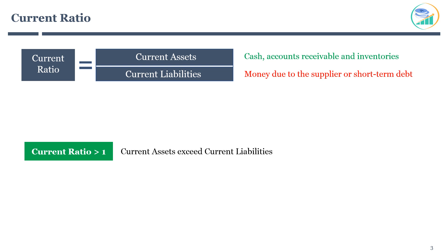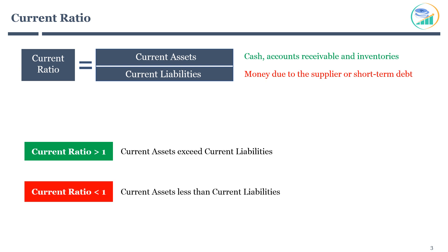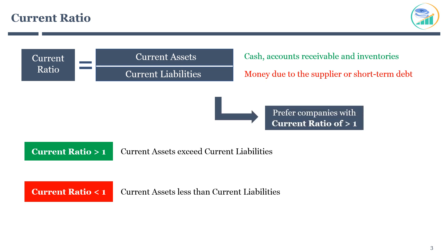On the other side, when the current ratio is less than 1, this means the company's current assets are less than current liabilities. This means the company can struggle to pay off its current liabilities with its total current assets. It might have to raise additional debt to pay off short-term obligations, which is not a good sign. In general, you should prefer companies with a current ratio of more than 1.